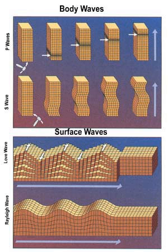Seismic waves are waves of energy that travel through the Earth's layers, and are a result of earthquakes, volcanic eruptions, magma movement, large landslides, and large man-made explosions that give out low-frequency acoustic energy. Many other natural and anthropogenic sources create low-amplitude waves commonly referred to as ambient vibrations.